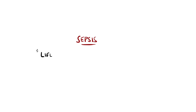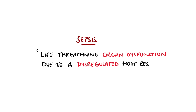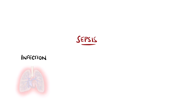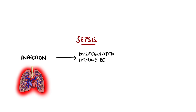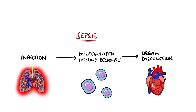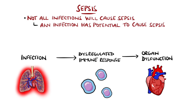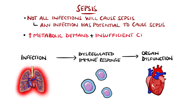The definition of sepsis is a life-threatening organ dysfunction caused by a dysregulated host response to an infection. In sepsis, the body's response to the infection ends up causing damage to the organs, eventually leading to failure of the organs and death. It's important to know that not all patients with infections have sepsis, but any infection has the potential to lead to sepsis. In general, the organ dysfunction from sepsis results from increased metabolic demands combined with insufficient circulation — increased demand and a reduction in supply.